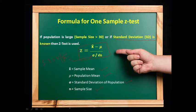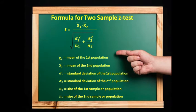The formula for two-sample Z-test is: Z = (x̄₁ − x̄₂) / √(σ₁² / n₁ + σ₂² / n₂), where x̄₁ is the mean of the first population, x̄₂ is the mean of the second population, σ₁ is the standard deviation of the first population, σ₂ is the standard deviation of the second population, and n₁ is the size of the first sample.